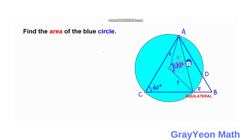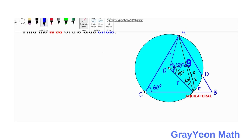Next, we draw a perpendicular bisector from the center of the circle to segment AE. This is perpendicular, so we form two right triangles, and this half-segment is 9 over 2. Since the central angle was 120 degrees, this half-angle is 60 degrees, and the remaining angle must be 30 degrees, forming a 30-60-90 triangle. We label the point of intersection of the perpendicular as F.